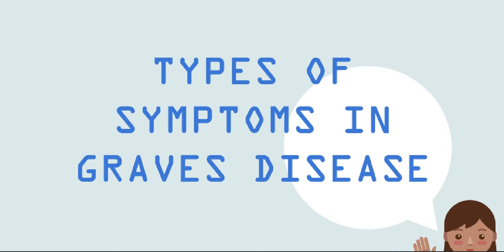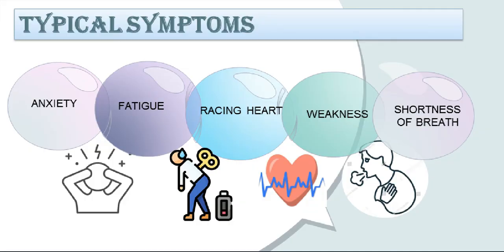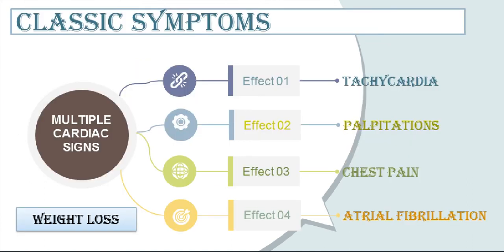Let's check the multiple symptoms observed during Graves' disease. Typical symptoms are general symptoms observed in almost all patients: anxiety, fatigue, racing heart, weakness, and shortness of breath. Classic symptoms are of two types: one related to cardiac signs and the other is weight loss. Multiple cardiac signs observed in Graves' patients are tachycardia, palpitations, chest pain, and atrial fibrillation.